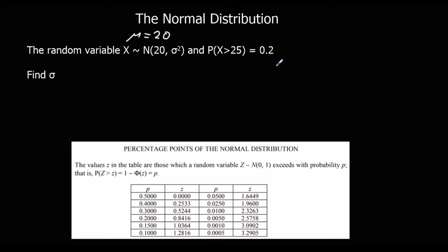But what we have been given is a probability. So the probability that X is bigger than 25 is 0.2. So we've got a normal distribution with a mean of 20, and we know that above 25 we've got a probability of 0.2.